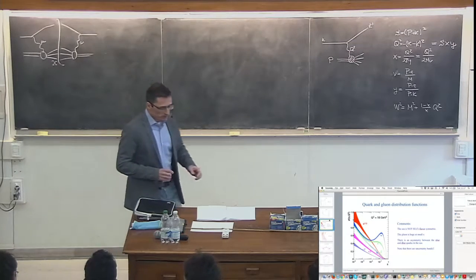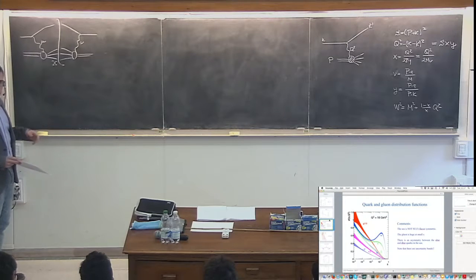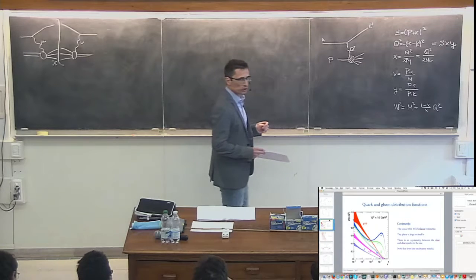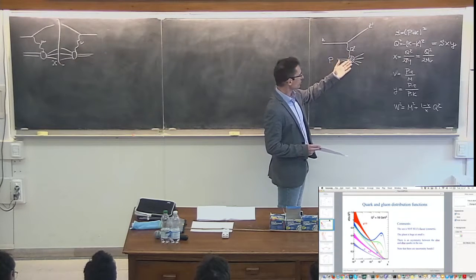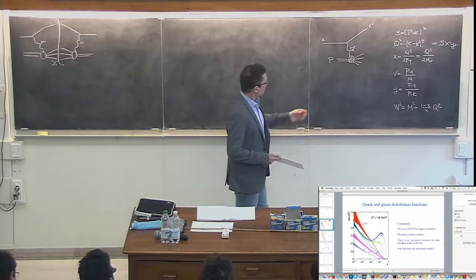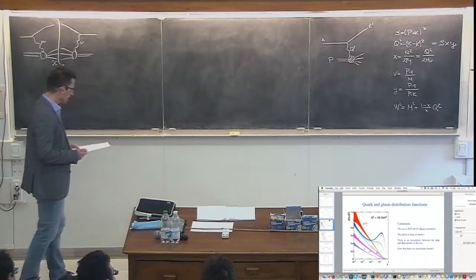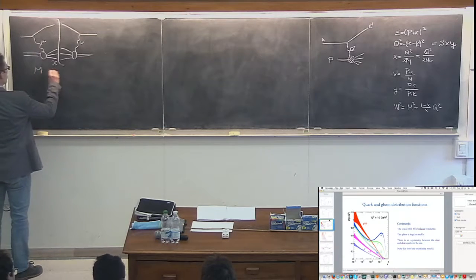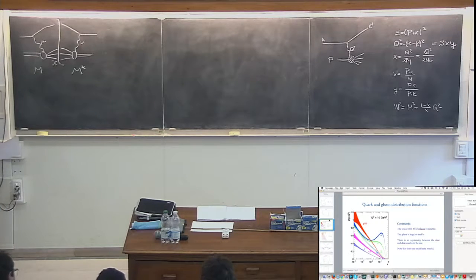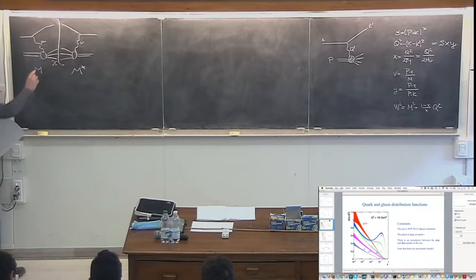The idea today is to make a computation in DIS. The first approach is to just parameterize our ignorance on what is going on in this event, where a virtual photon scatters with a proton, and most of the time, as we saw yesterday, it actually breaks it. So, how can we parameterize this amplitude in a very simple way? We compute the square of the amplitude — this is M squared — this is a way of representing it. And as you can see, this amplitude divides into exactly two parts.